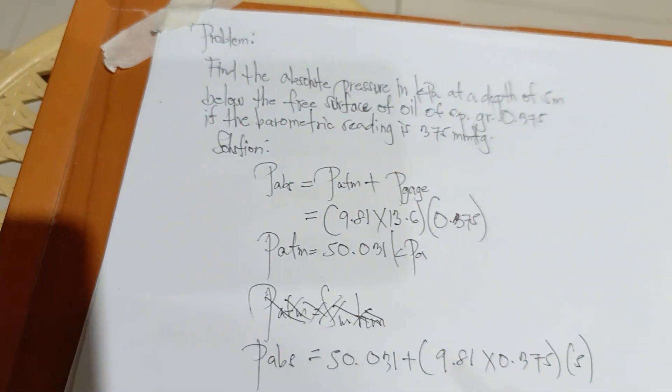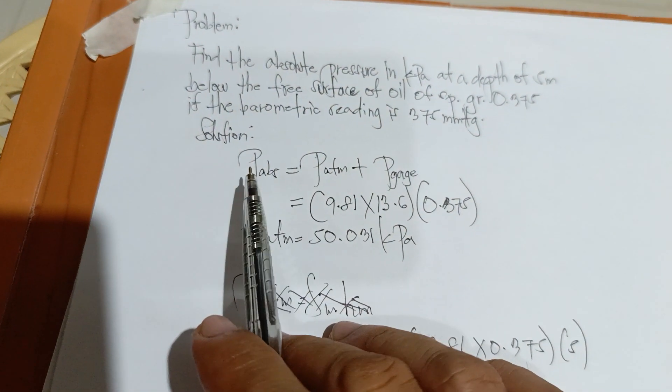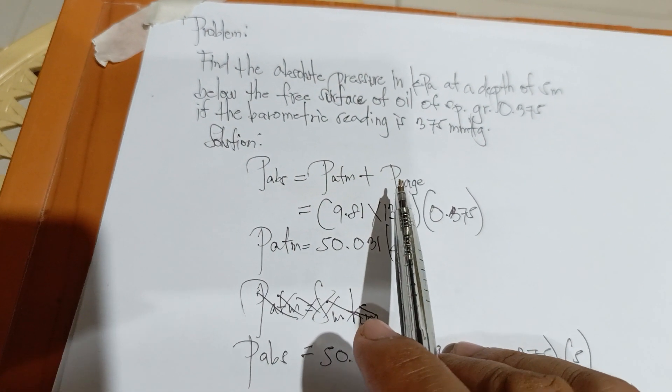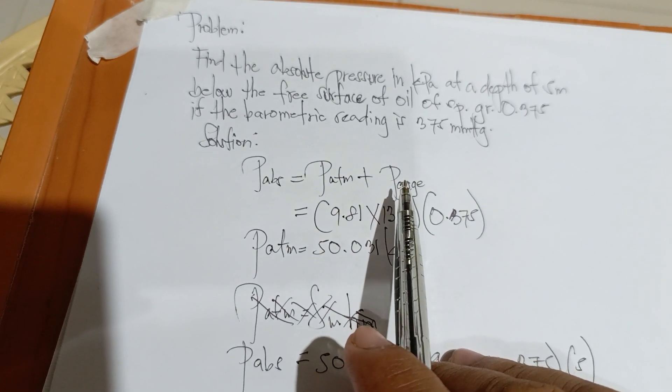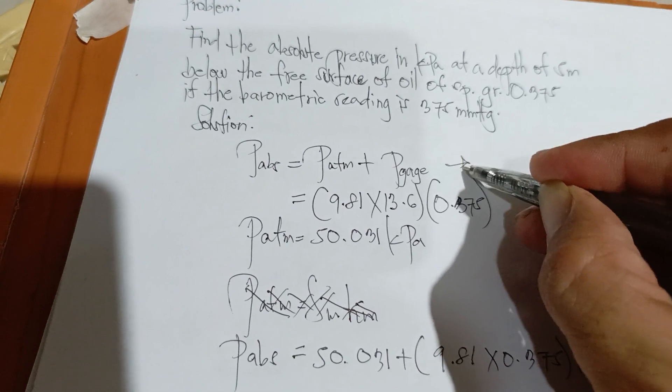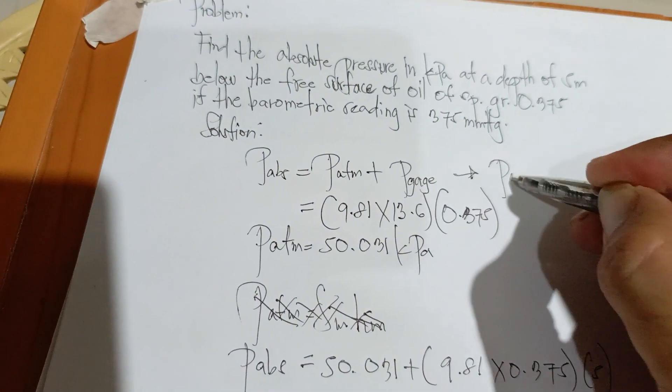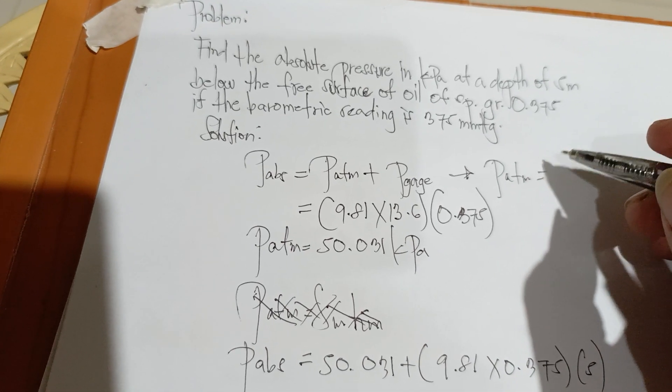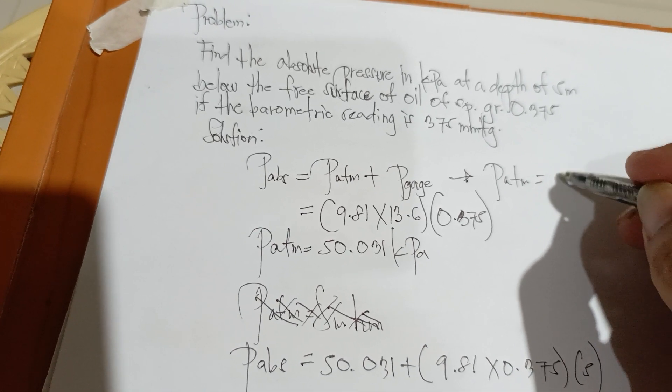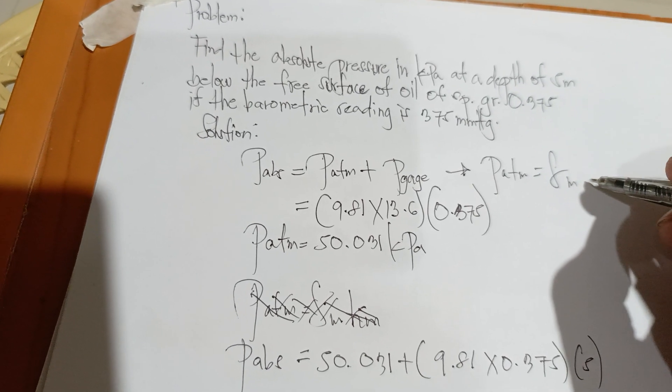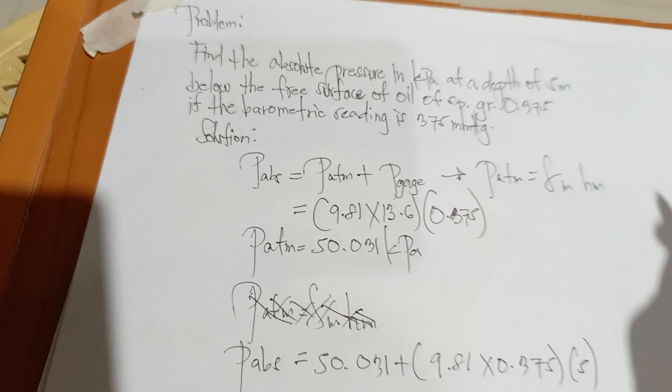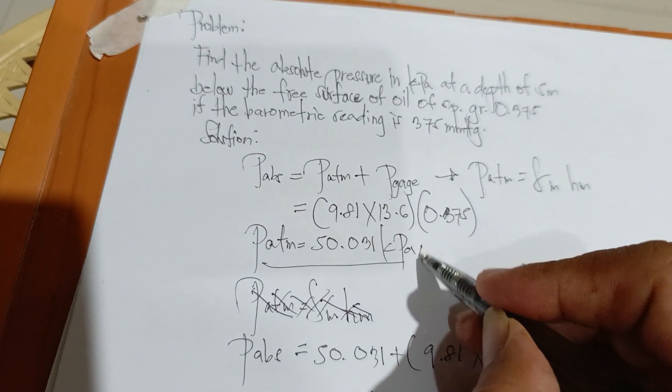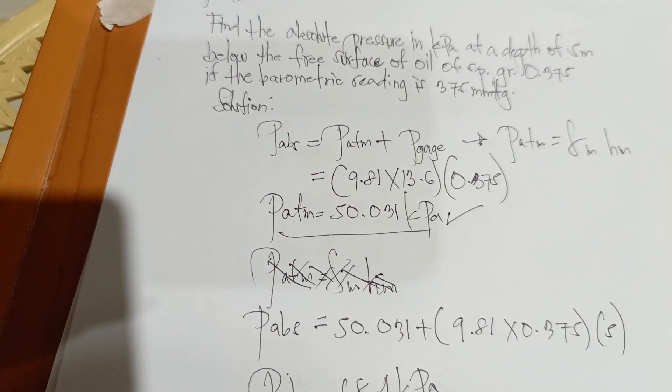Let's review this first, guys. Pressure of absolute equals pressure of atmosphere plus gauge. So this equals pressure of atmosphere, which equals density times gravity times height of mercury, 50.03 kilopascals.